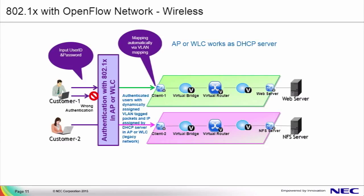Similarly, when customer 2 is authenticated, the RADIUS server allocates a different VLAN ID. This allows the ProgrammableFlow network to map customer 2's traffic into the pink VTN, allowing access to the NFS server. This illustrates we can isolate users into different virtual tenant networks and also isolate them from the wired users. Also recall in this scenario, we're not showing the DHCP server in the virtual network, since the wireless LAN controller offers IP addresses to customer 1 and customer 2. In the next slide, we'll show a detailed packet walkthrough to understand the authentication steps.